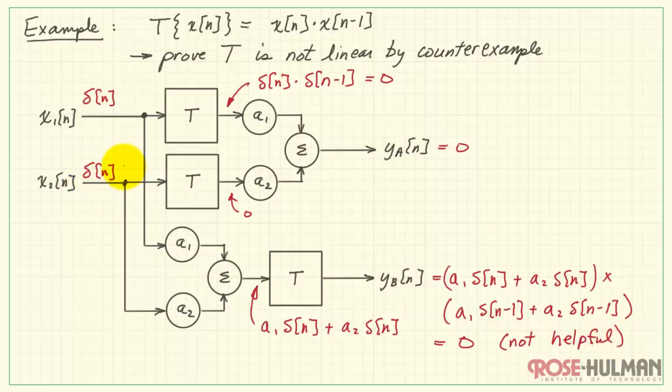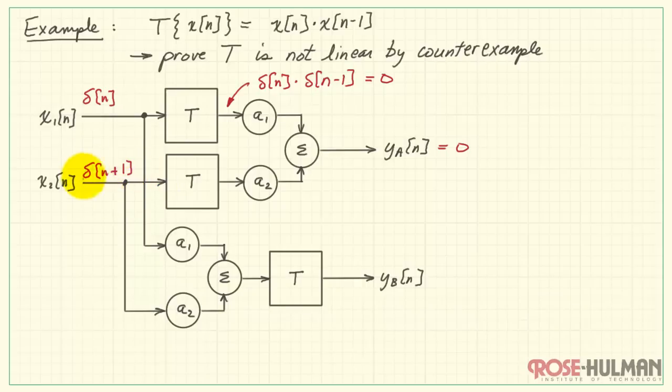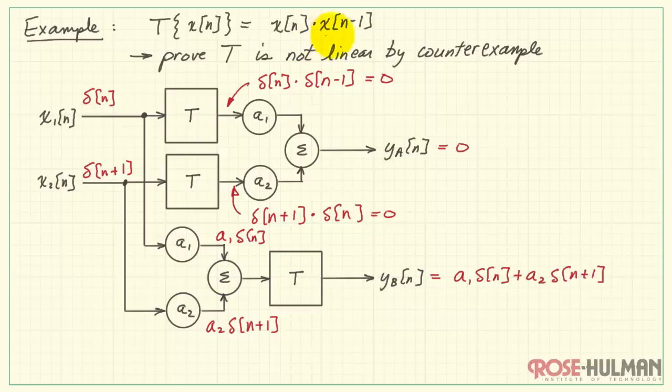So this is not really helpful for a counterexample proof. But if I advance this delta function by 1, then we see that when delta of n plus 1 is multiplied by delta of n, we still have 0, so nothing's different on the top version of this. But something helpful happens down here. Delta of n plus 1 times a2 added to a1 times delta of n. When we pass that through our system, we have the present input times the previous input. Let's recognize now that since we're delaying that by 1, we have delta of n minus 1 and delta of n.